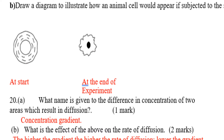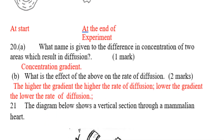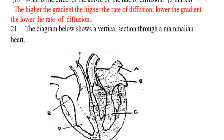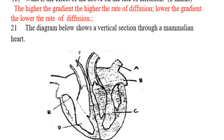Question number 20: what name is given to the difference in concentration of two areas which results in diffusion? That is called the concentration gradient. What is the effect of concentration gradient on the rate of diffusion? The higher the gradient, the higher the rate of diffusion; and the lower the gradient, the lower the rate of diffusion.